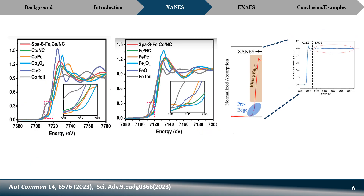The rising edge region gives information about the oxidation state. Suppose you synthesize a material with two different metals, iron and cobalt. You need to consider the XANES spectra of the two metals separately. You need reference samples whose oxidation states are already known, so you can compare your synthesized material with those to determine its oxidation state.